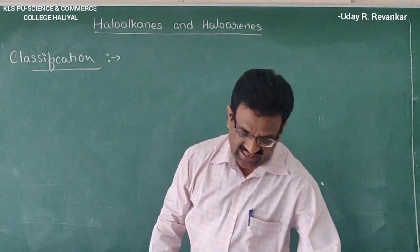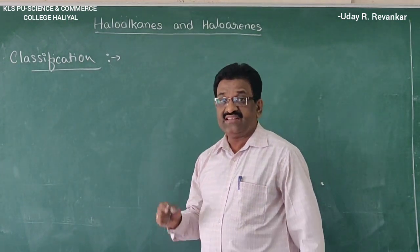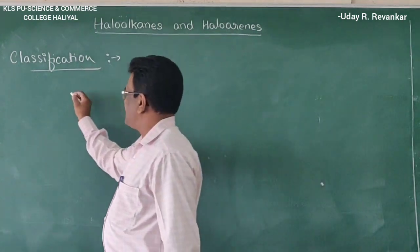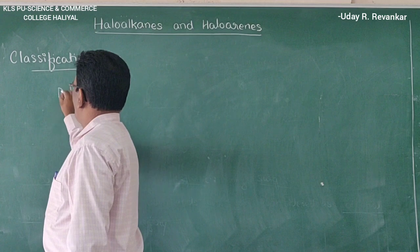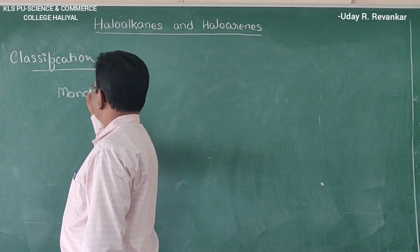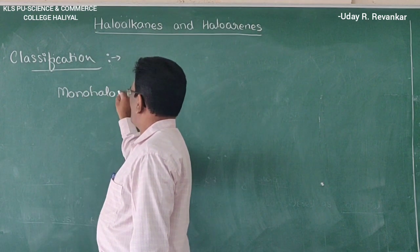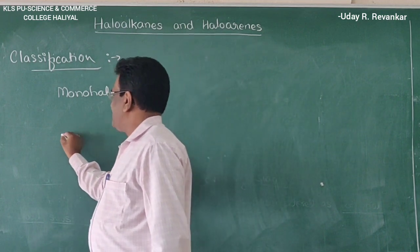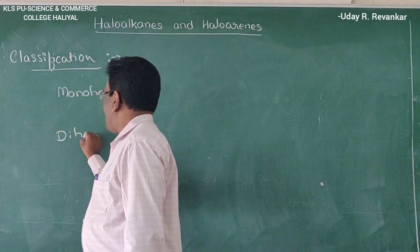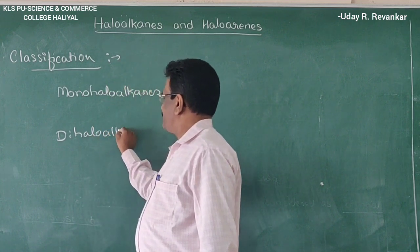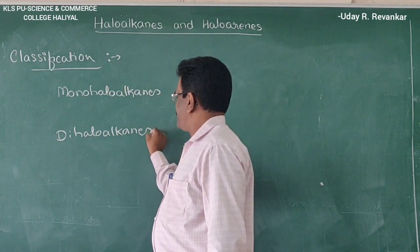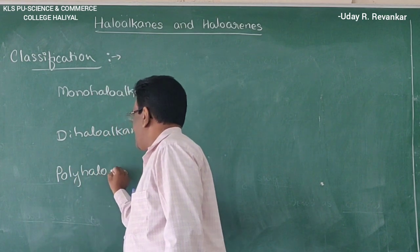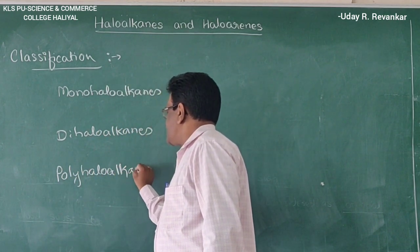These are classified on the basis of number of halogen atoms present in a molecule. They are classified as monohalides, dihalides, and polyhalides.